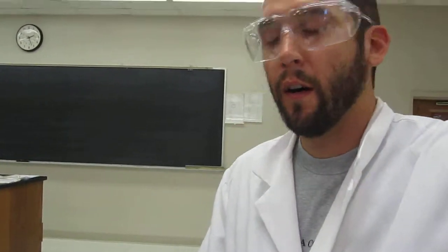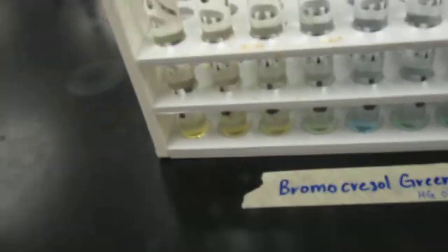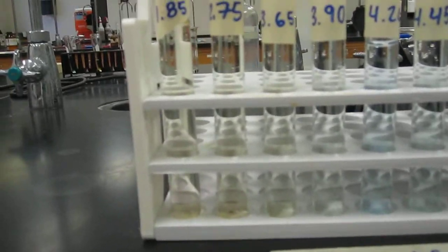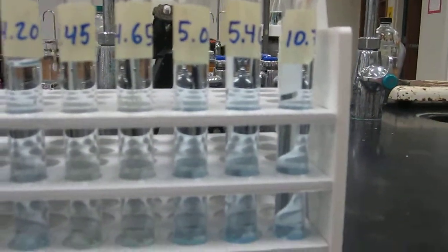Okay, so right now I want to introduce you to the three indicators that we'll be using in today's experiment over the three different pH ranges. So the first one is bromocresol green, and you can see the color change from yellow to green to blue.